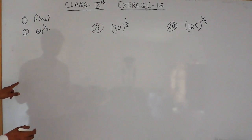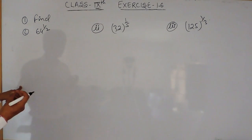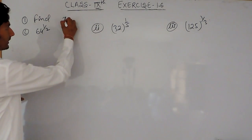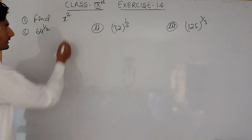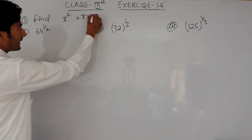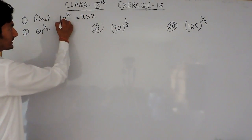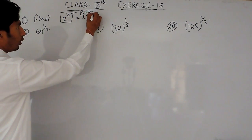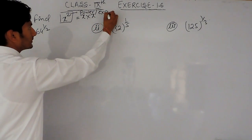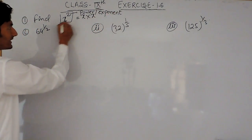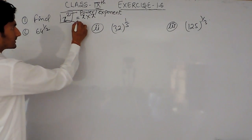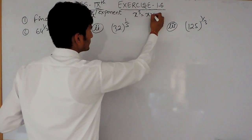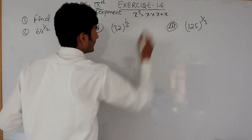Before solving this, you must remember certain laws of exponents. If I am writing x squared, this means x is multiplied by x. In this expression, this is known as the power or exponent, and x is known as the base. So if I am writing x cubed, this means x multiplied by x multiplied by x.